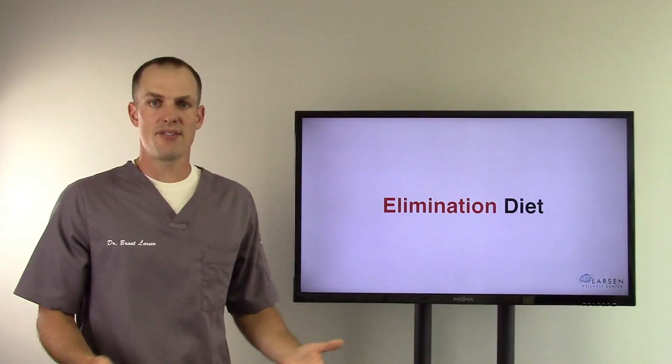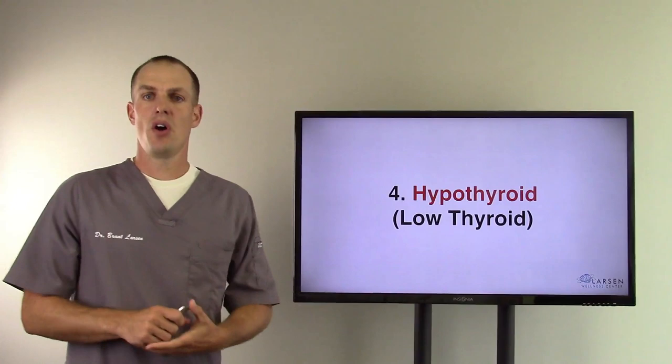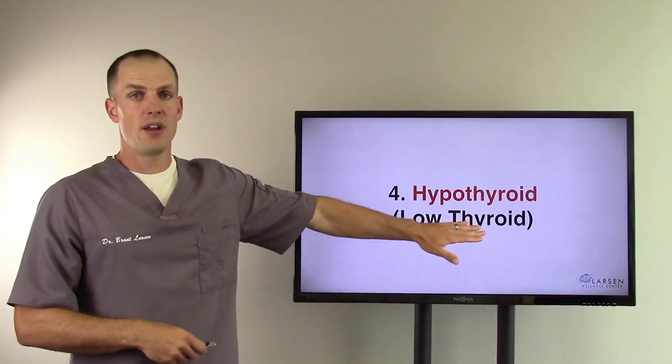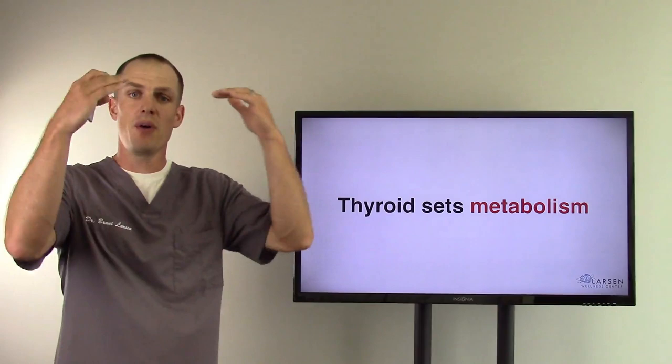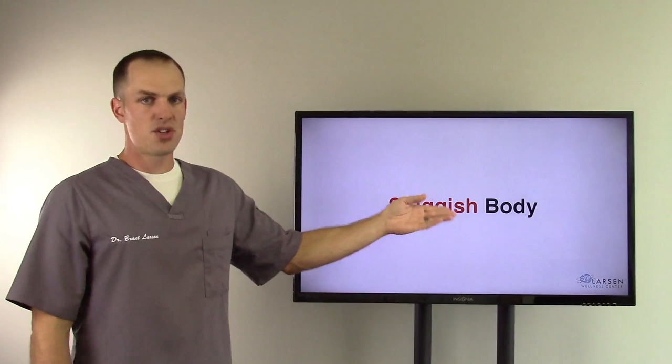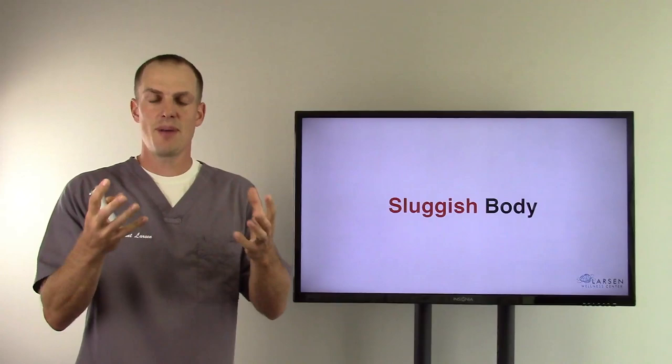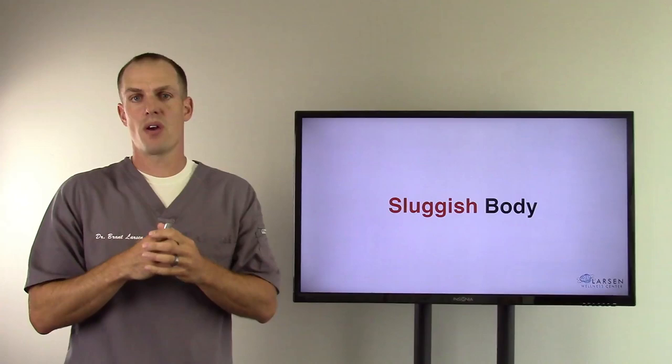Number four is hypothyroid, which is low thyroid. I see a lot of low thyroid patients in my office. I don't treat them for low thyroid, I treat the person. But low thyroid is a really big one because your thyroid sets your metabolism. If your thyroid's low, everything about your body is low. You have a sluggish body, sluggish cells, a sluggish brain, sluggish colon, sluggish gallbladder, liver. Everything is sluggish because every cell in your body has receptor sites for thyroid hormone. If you're low in that hypothyroid, everything is sluggish.